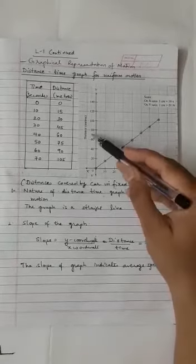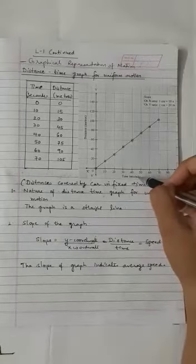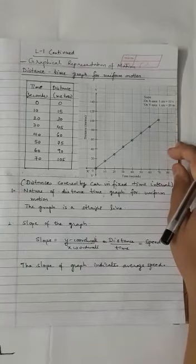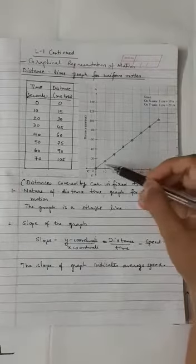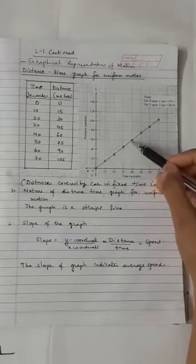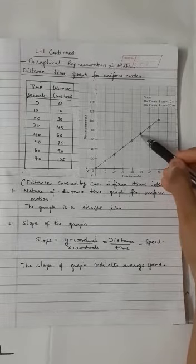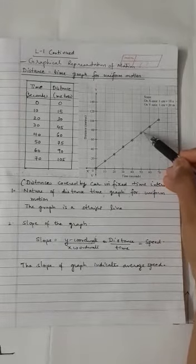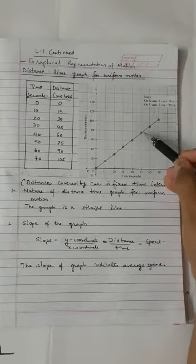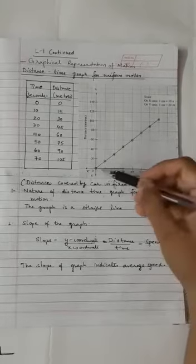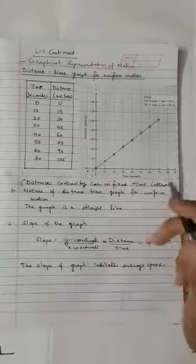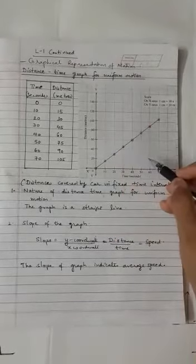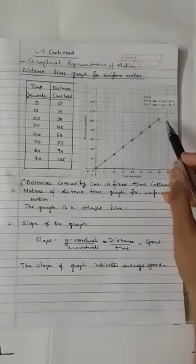We are going to plot a graph of distance versus time. The distance-time graph determines the change in the position of the object. The speed of the object can also be determined using the line graph. Here, the time is taken along the x-axis in seconds, and the distance is taken along the y-axis.